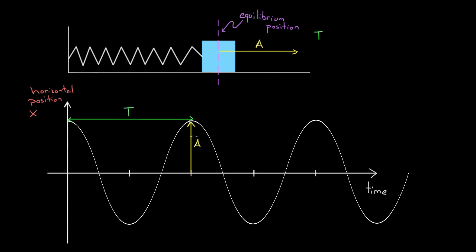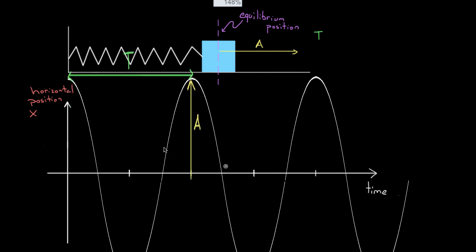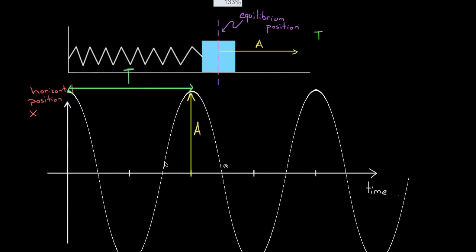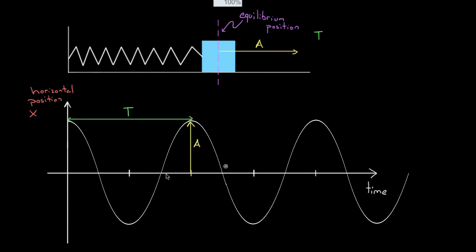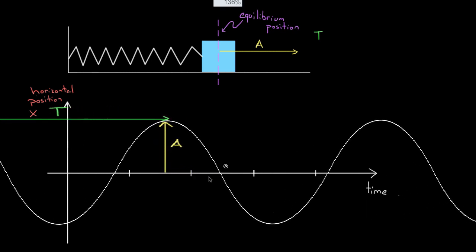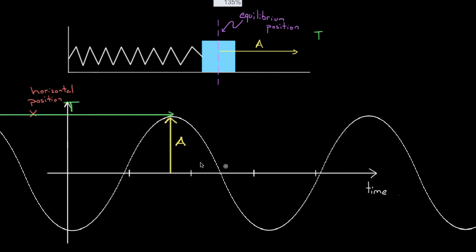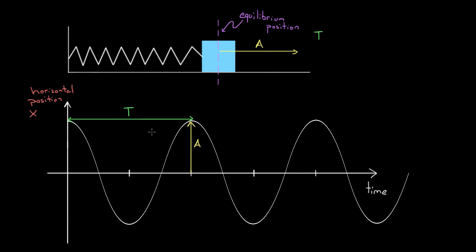With a graph that's a sine or a cosine, you could represent any motion you want. If you had some oscillator with a larger amplitude, you could just stretch the graph vertically — the period would stay the same but the amplitude changes. Or if you had something with a larger period, you could stretch it out horizontally, leaving the amplitude the same, or stretch it both ways to represent any oscillator you want.